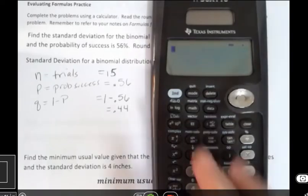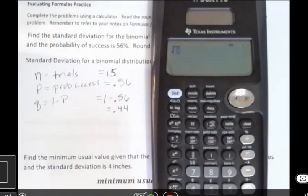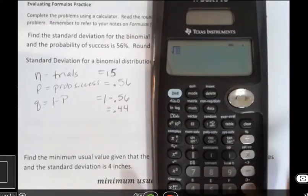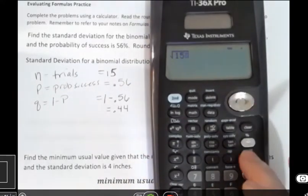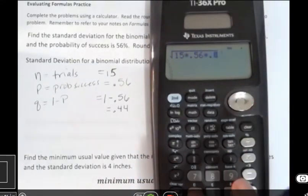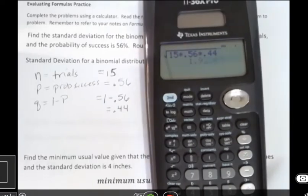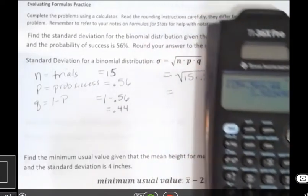Your calculator may be different, but you can go to YouTube and Google any calculator, and that will be fine. So we have 15 times 0.56, times 0.44, and then I'm going to hit enter. Now this comes out to be a very long number.